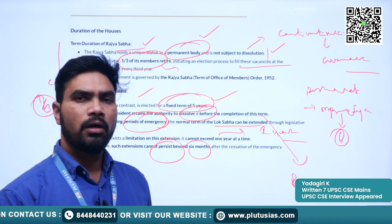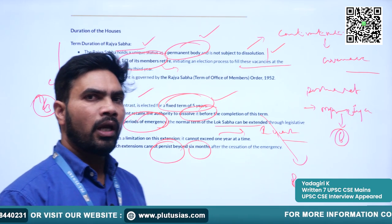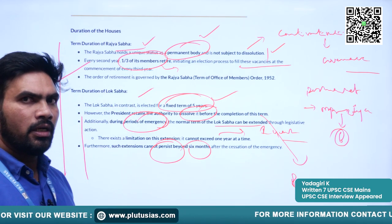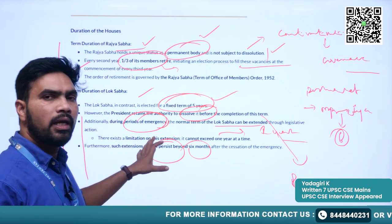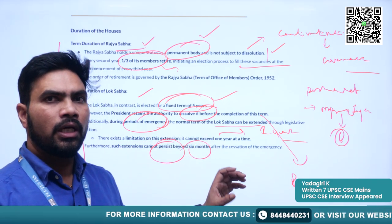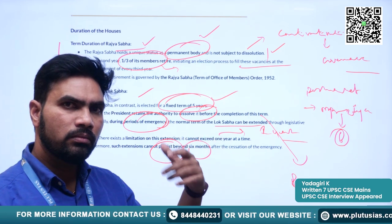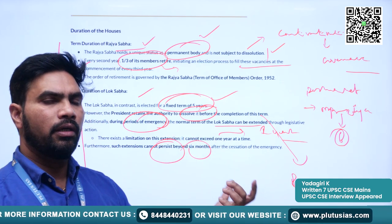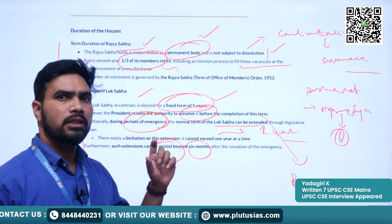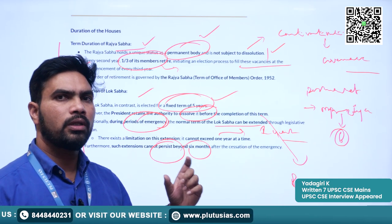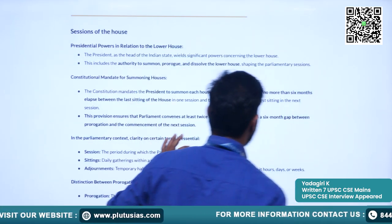The house can be dissolved before the five-year tenure if the President decides to do so. Similarly, during emergencies, the tenure of the house can be extended, but at any particular time it should not be more than one year. This is about the tenure of the houses.